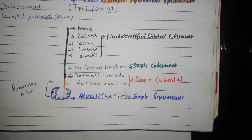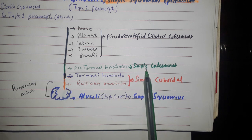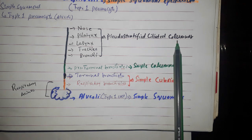Alveoli which is called type 1 pneumocyte, lined by simple squamous epithelium. So first of all simple squamous epithelium, simple cuboidal, simple columnar and pseudostratified ciliated columnar.